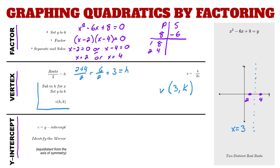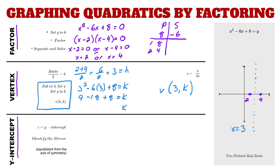These two steps go hand in hand. We sub in h for x and set y to k, so that becomes 3 squared minus 6 times 3 plus 8 equals k. Nine minus 18 plus 8 gives k equals negative 1. So our vertex is (3, negative 1).